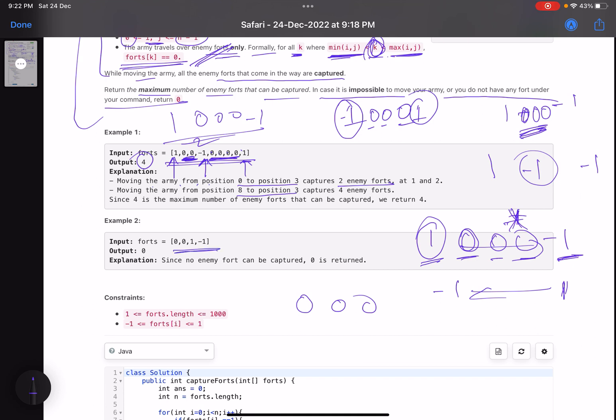In this example, the only way you can move is, since there is no enemy fort, 0 is returned because from 1 to -1 you don't have a 0. You will not move, right?